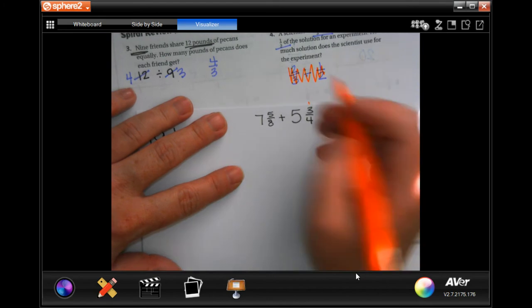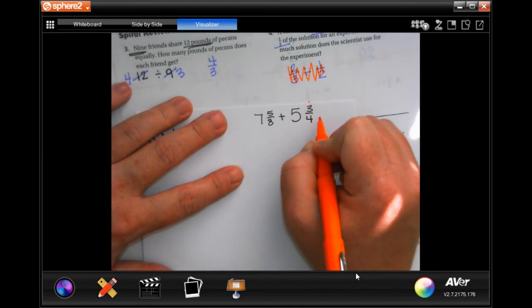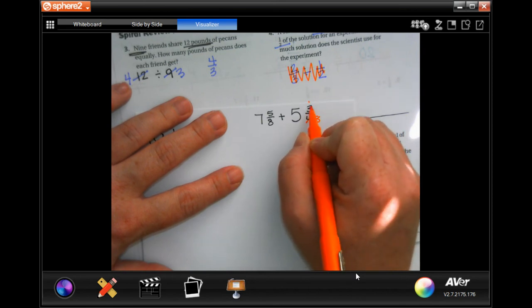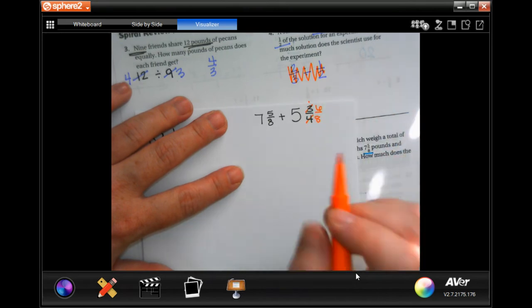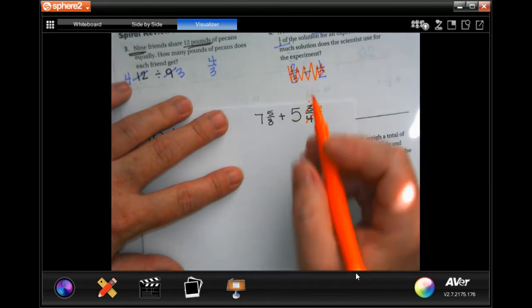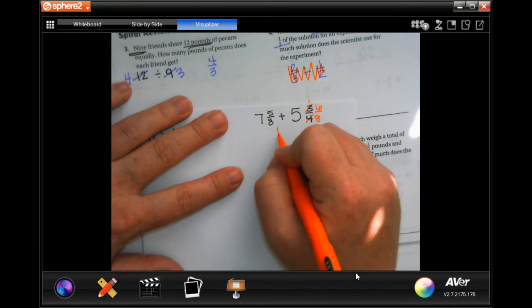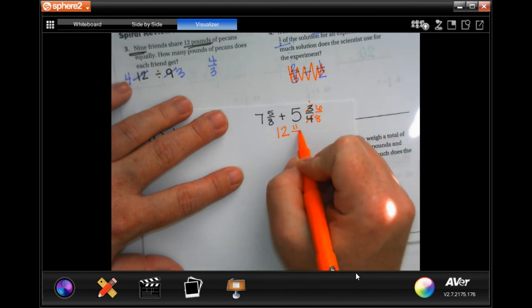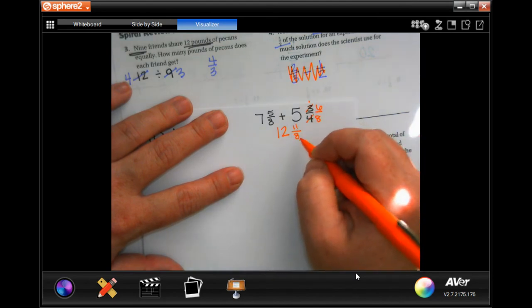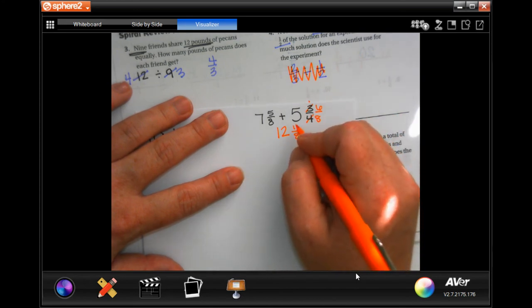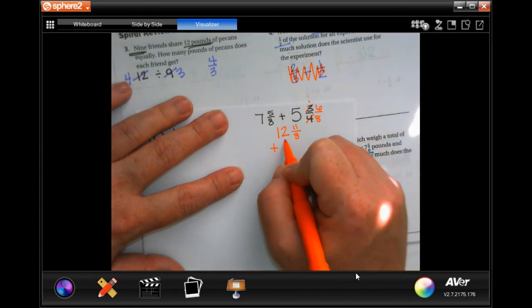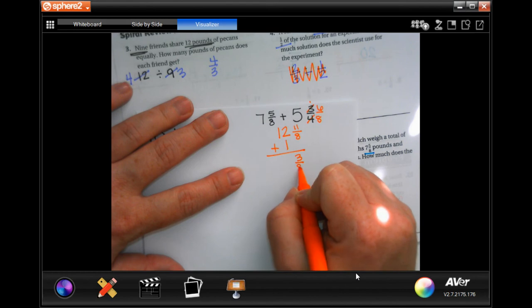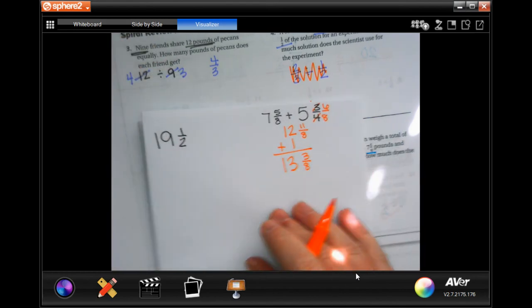So, 7 and 5 eighths and 5 and 3 quarters. First, we need a common denominator. So, between the two of them, that's going to be 8. Well, I had to multiply 4 by 2 to get to 8, so now I'm going to multiply 3 by 2 and I'm going to get 6. So, now I have 6 eighths. So, 7 plus 5 is 12. 5 plus 6 is 11 and I keep my denominator. You'll notice that 11 is larger than 8, so I need to go, how many times does 8 go into 11 and I'm going to go one time? And then I would have 3 left over. My denominator stays the same. So, 13 and 3 eighths.